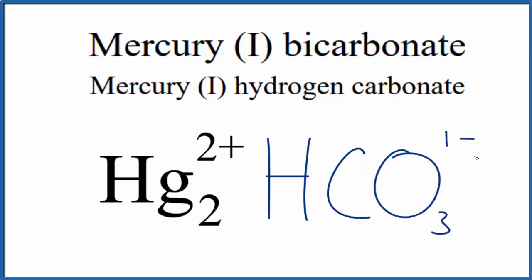Since mercury (I) bicarbonate is neutral—it doesn't say ion after these names—these charges need to add up to zero. We need a net charge of zero. If we had two of these hydrogen carbonate ions, two times 1- gives us 2-, which would balance out the 2+.